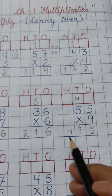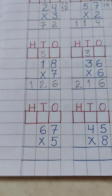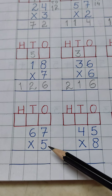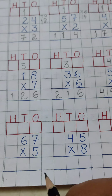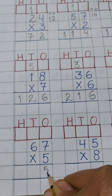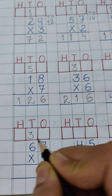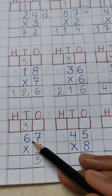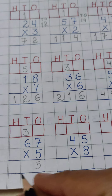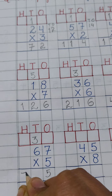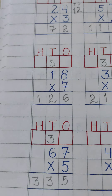The next part is 67 multiply by 5. 5 7's are 35 — write 5 and carry 3 to the 10's place column. 5 6's are 30, plus 3 is 33. So the product is 335.